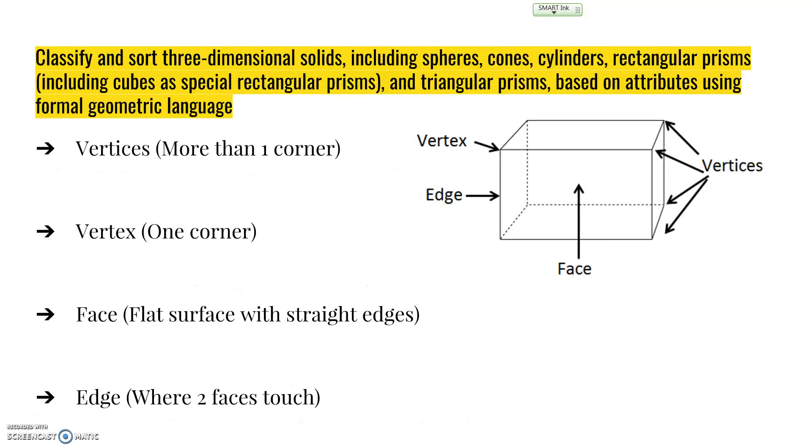They'll classify and sort three-dimensional solids, including spheres, cones, cylinders, rectangular prisms (including cubes as special rectangular prisms), and triangular prisms based on attributes using formal geometric language. We've already talked about vertices for more than one corner and vertex for one specific corner. A face is a flat surface with straight edges. An edge is where two faces touch.